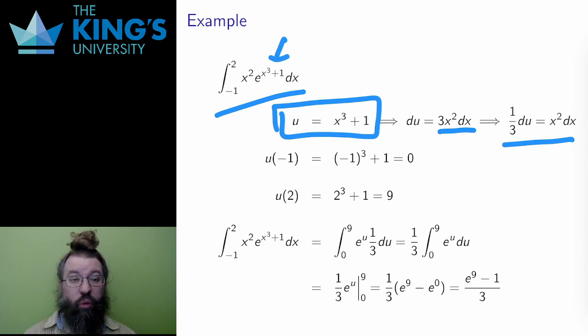Then I change the bounds. When x is negative 1, u is negative 1 cubed plus 1, which is 0. When x is 2, u is 2 cubed plus 1, which is 9. The new bounds are 0 to 9.